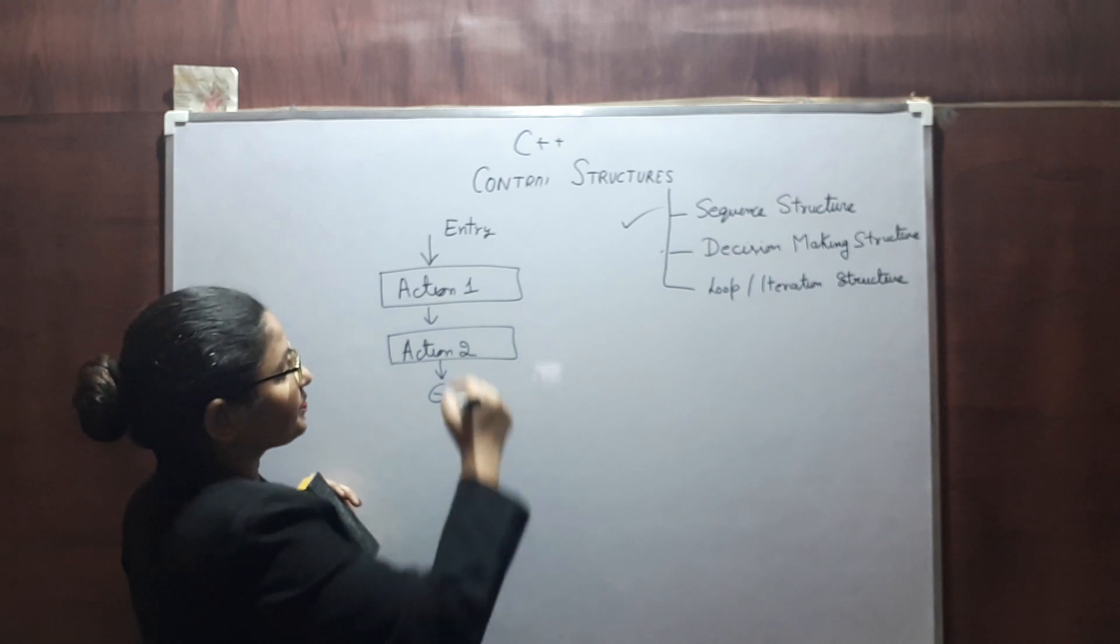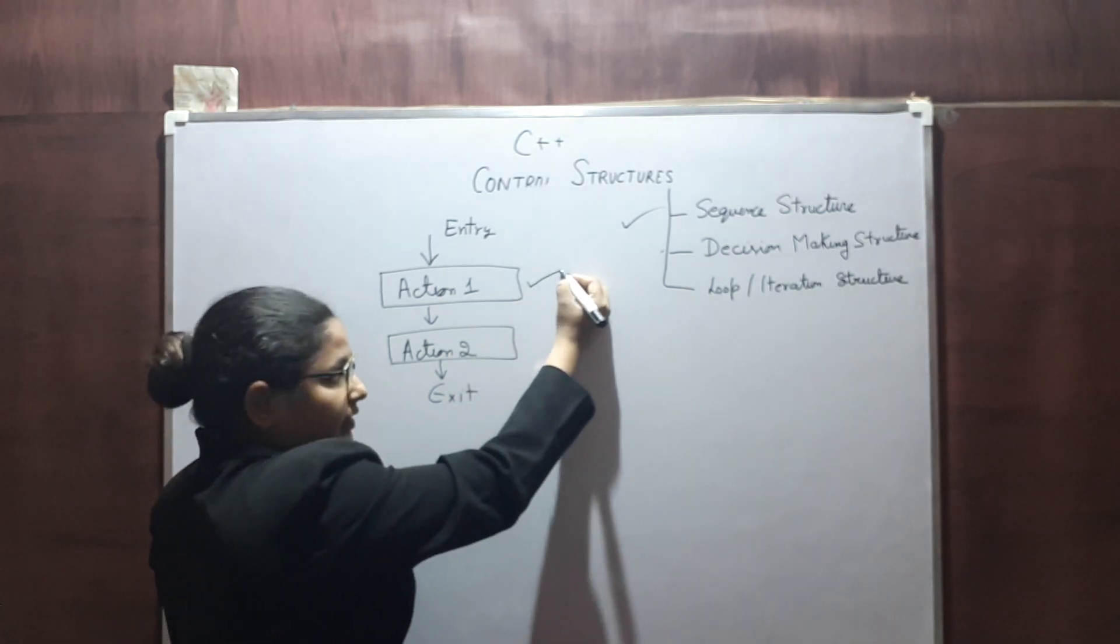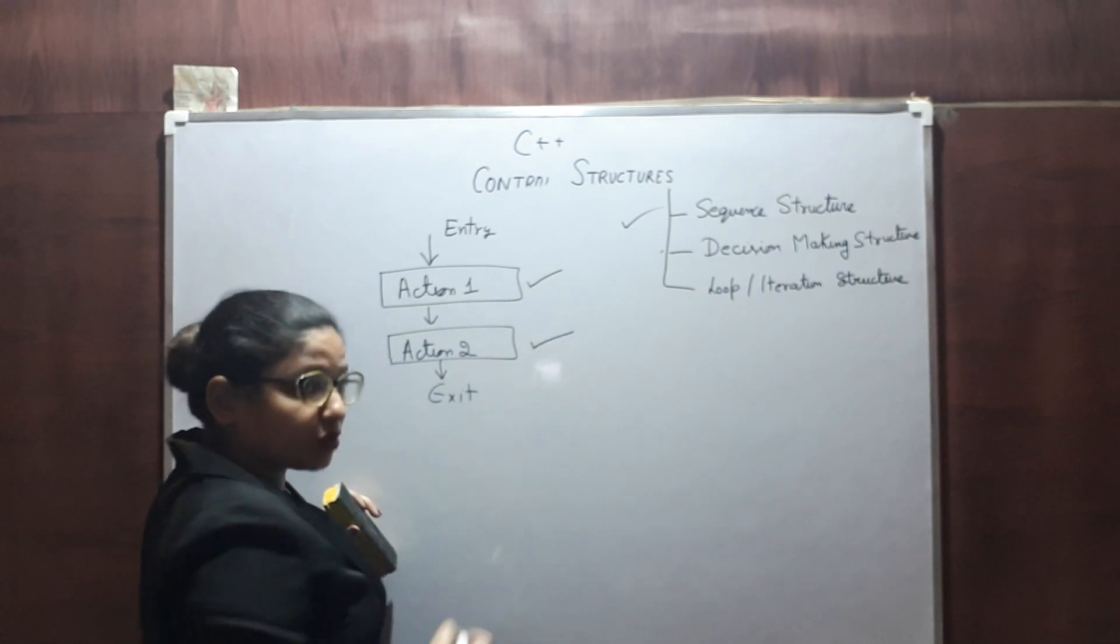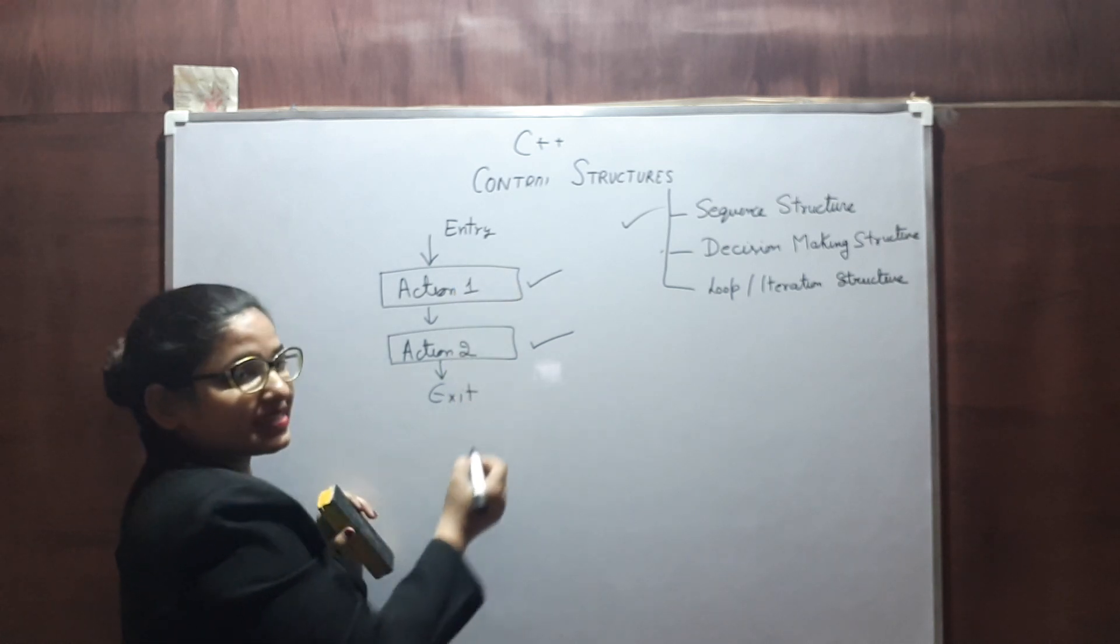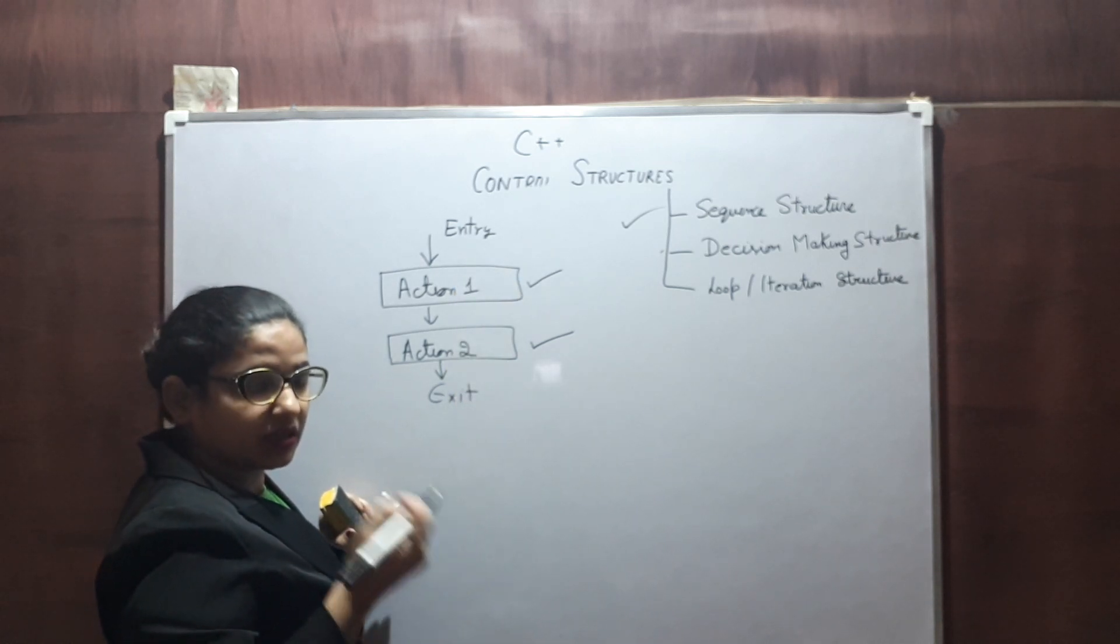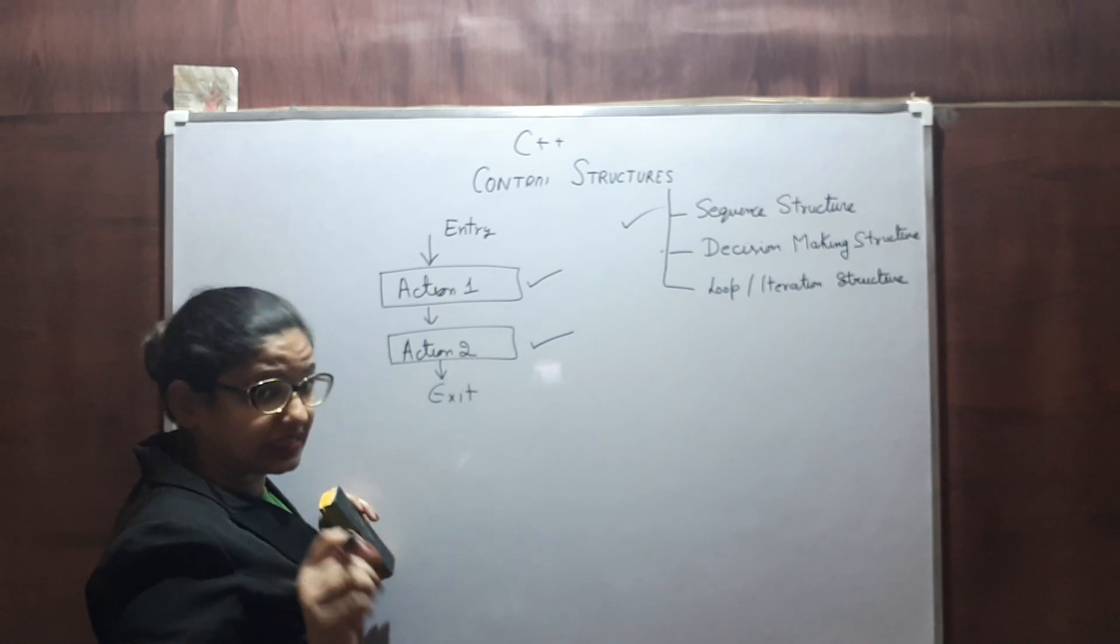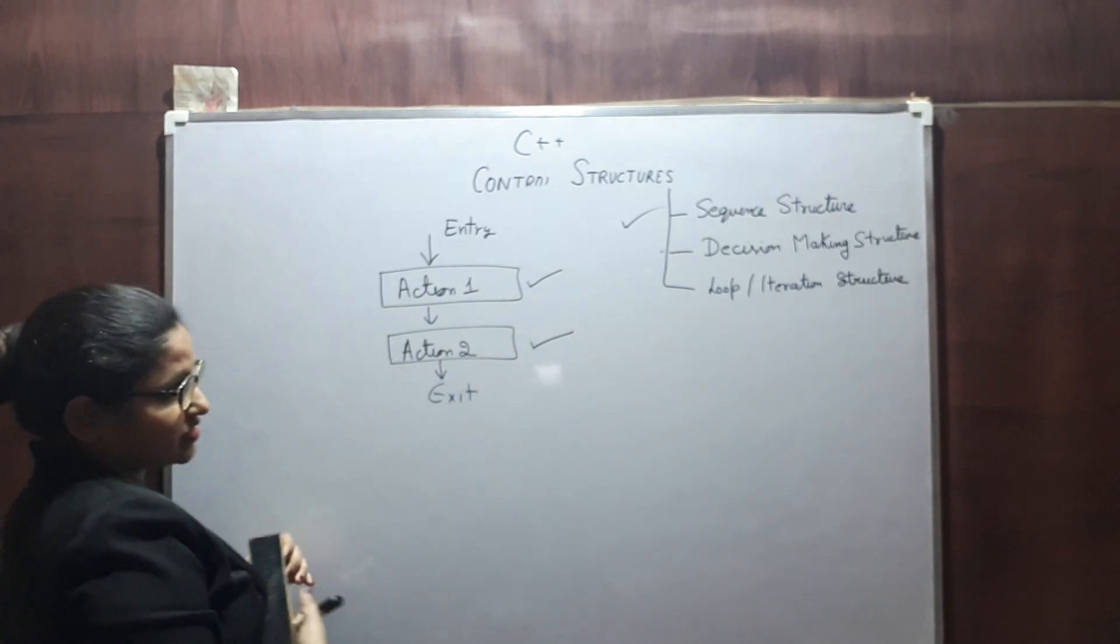As you can see, first we will perform Action 1. After Action 1 we will perform Action 2. So as you can see, one sequence is maintained. There is sequential flow of execution of instructions. So this is our sequence structure.